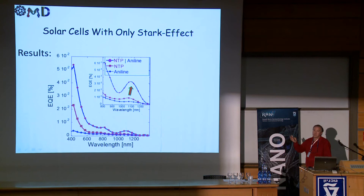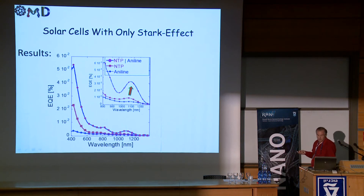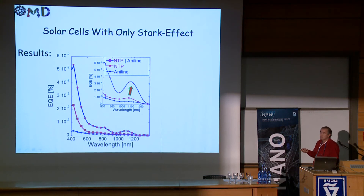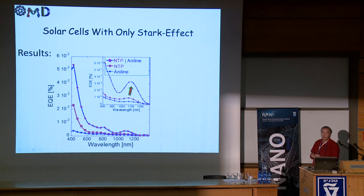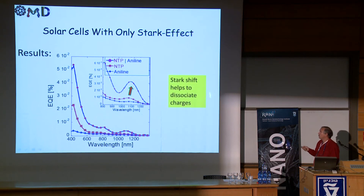For working solar cells you have to have more than just one building block or one technique. This is just one that we've added to hetero junctions and pn junctions — simply polarizing and manipulating the bands inside the nanocrystals, which are quantum dots with a radius of around 3 to 4 nanometers. Introducing Stark shifts helps to dissociate the charges.